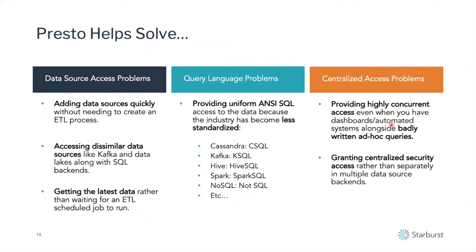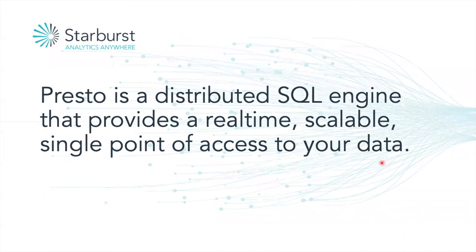I would have had concurrent access so I could have had more people connecting to it at once. And I could have granted centralized security and chosen which of the 25 data sources people get access to, because not everybody should see every data source. That's especially important at a company like Abbott Laboratories because we were life sciences — we had to deal with PHI, private health information, and quite a few regulatory requirements to prove that we were keeping it safe. A federated access platform solves a lot of problems. You can think of it as basically a distributed SQL engine that provides a real-time, scalable single point of access to your data.